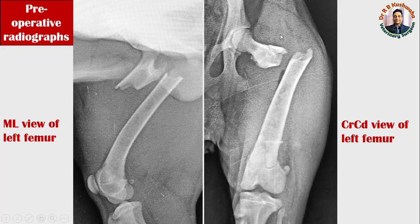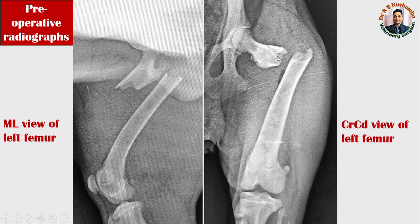Now looking at the craniocaudal view — from the mediolateral view it appears that the proximal fracture fragment deviated cranially whereas the distal fracture fragment deviated caudally. But from the craniocaudal view, you can see the distal fracture fragment deviated laterally. The proximal fracture fragment also deviated laterally, and the distal fracture fragment also deviated laterally.